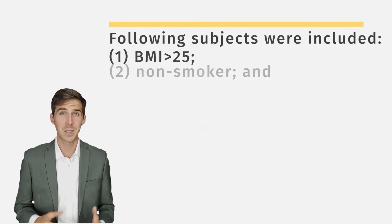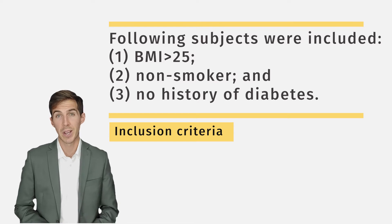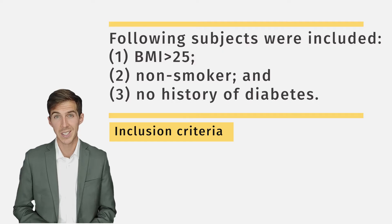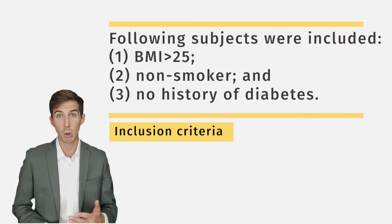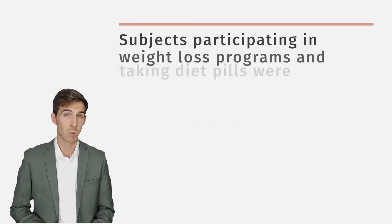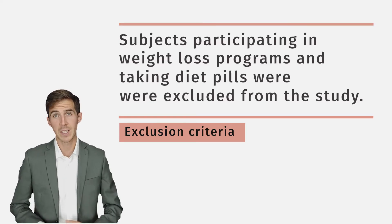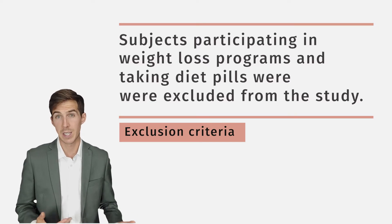It is very important to define the inclusion and exclusion criteria used for the study. The inclusion criteria defines the characteristics that make subjects eligible for the study. In our case, we only included non-smoking and non-diabetic subjects with a BMI greater than 25. The exclusion criteria defines the characteristics that make subjects ineligible. In our case, we are excluding subjects participating in weight loss programs and those taking dietary supplements.